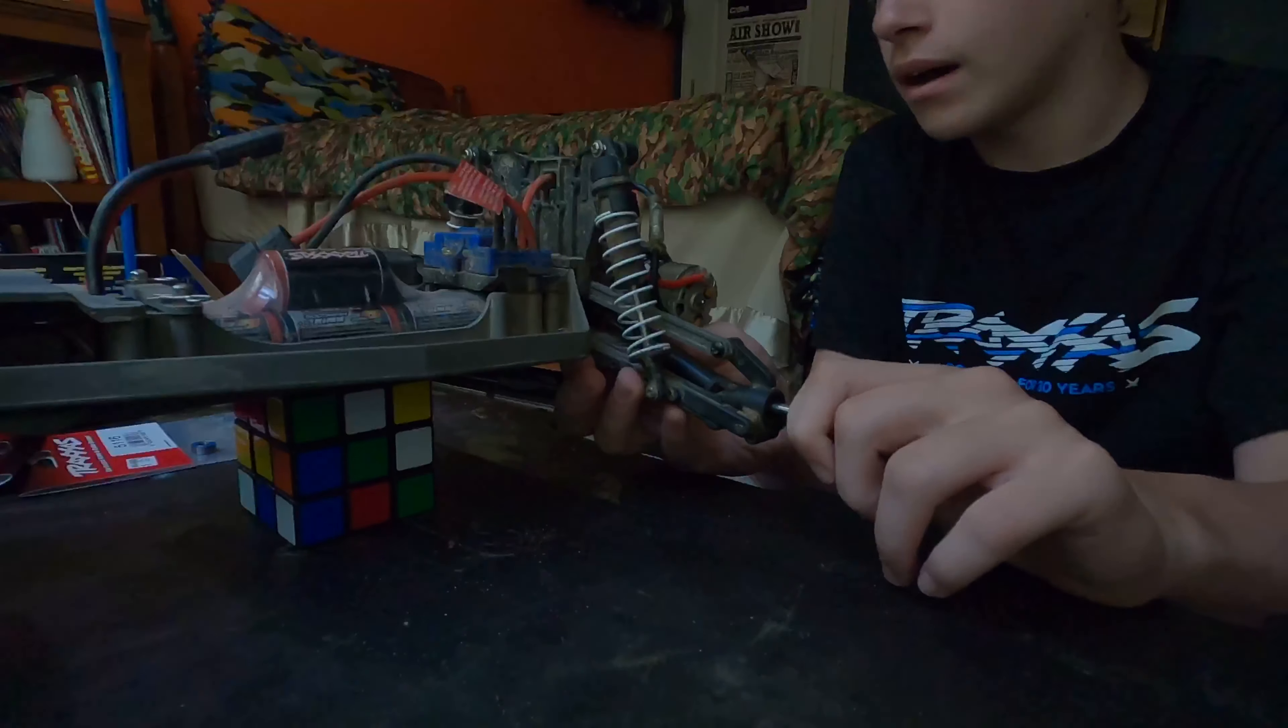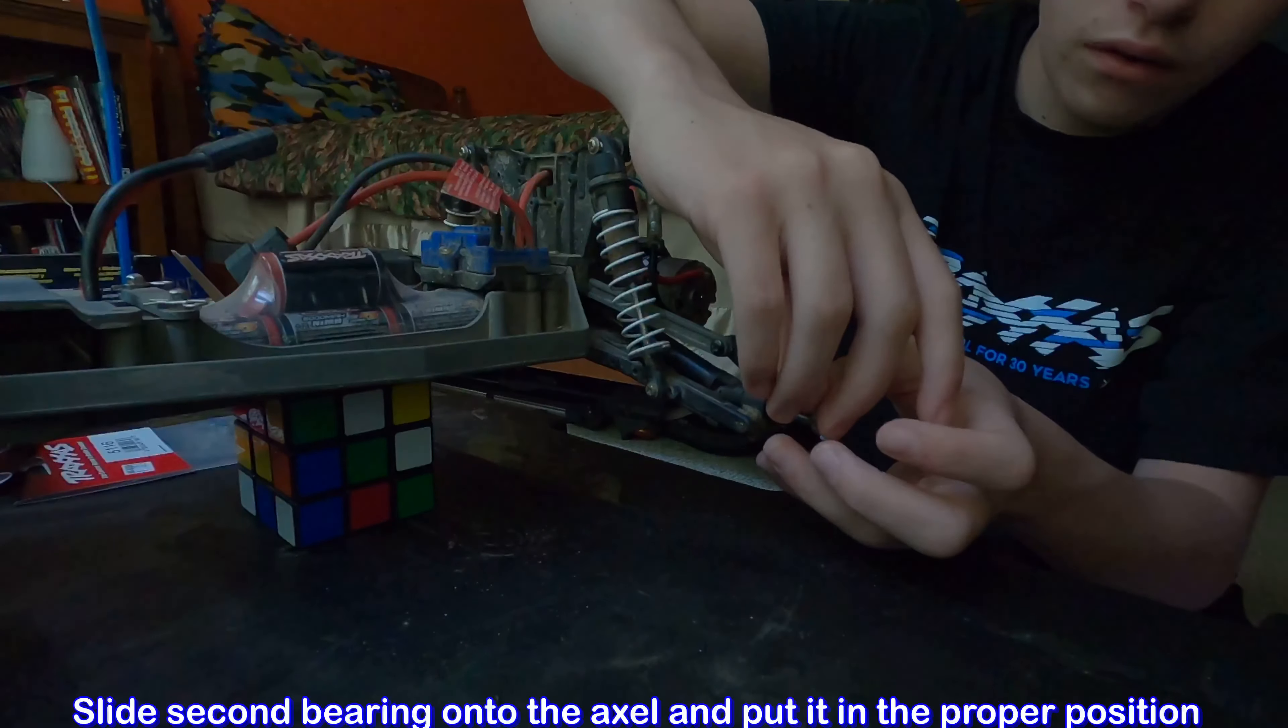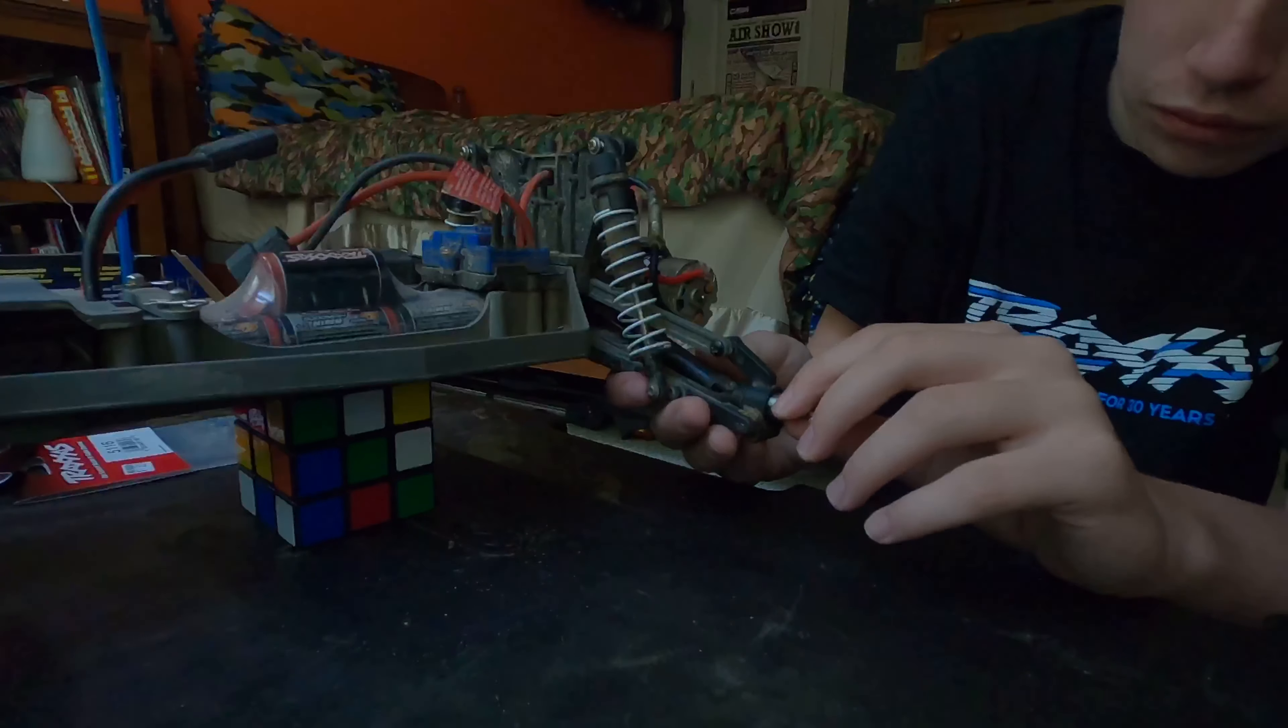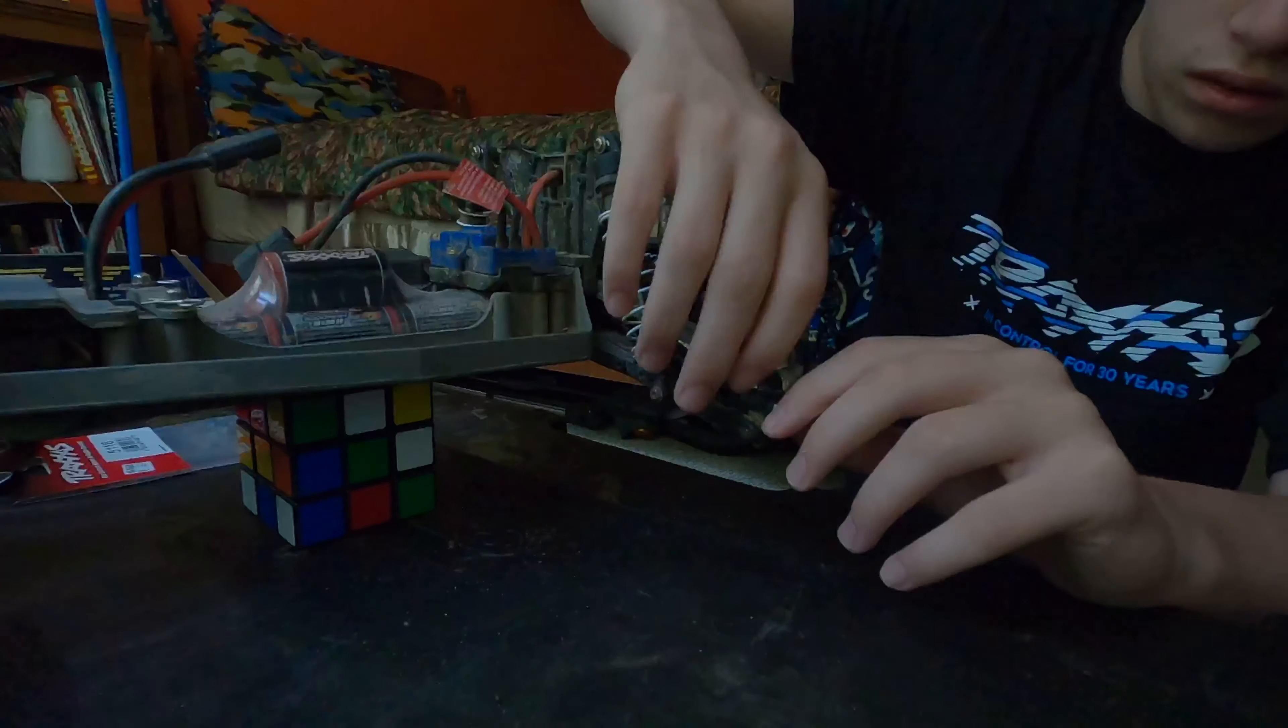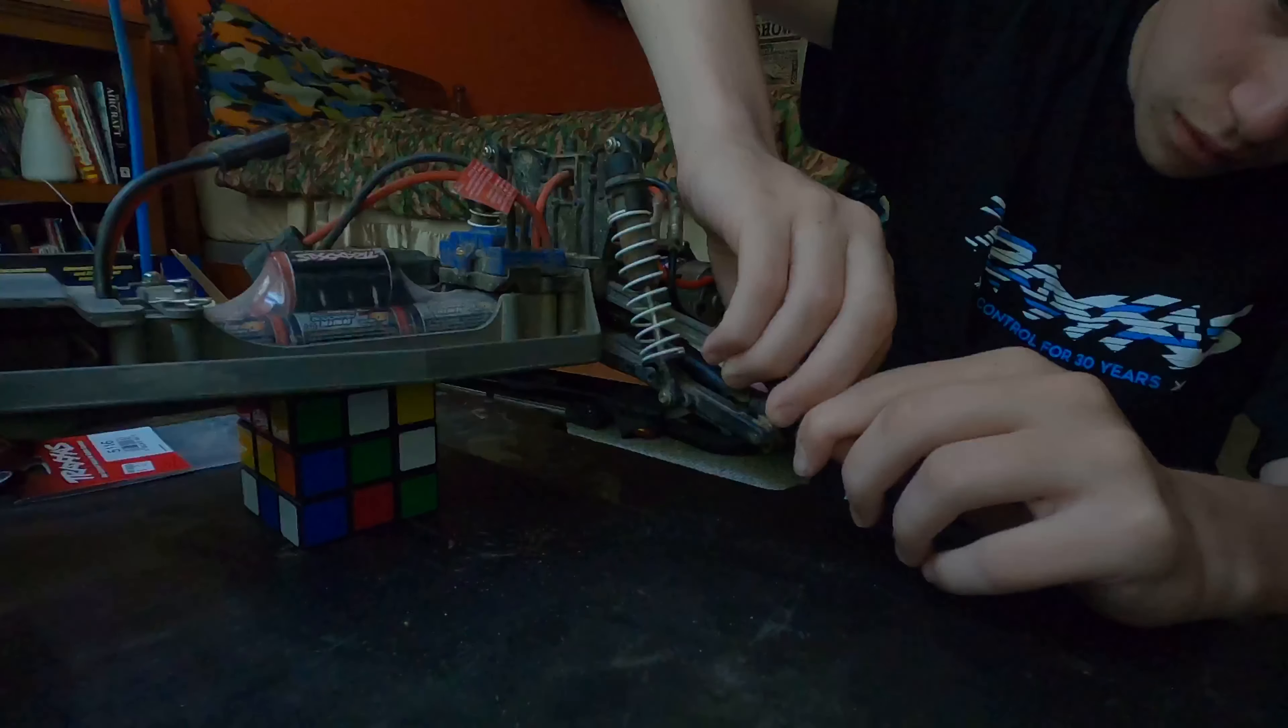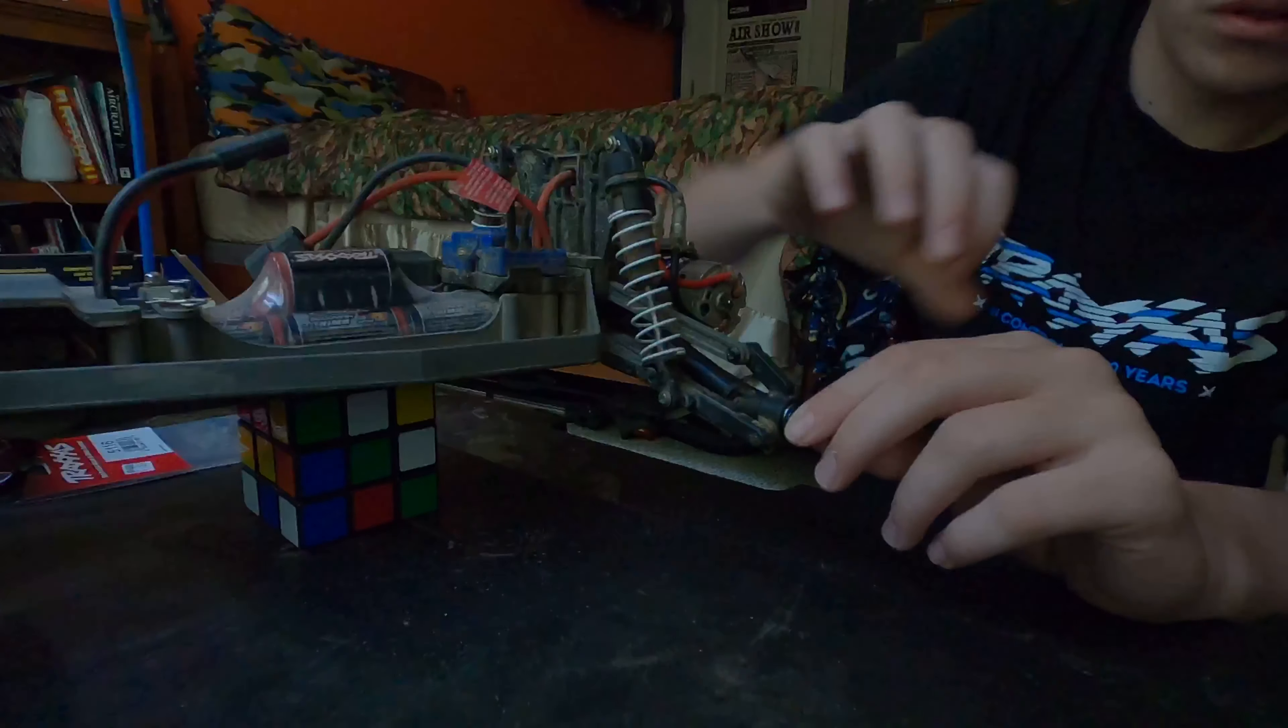Alright now take your other bearing, slide it over through here and slide it into the other gap where it's supposed to go. Make sure it is very tight. Just put it in all the way until it slides all the way in and there is room for you to put the pin.